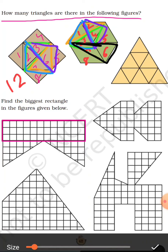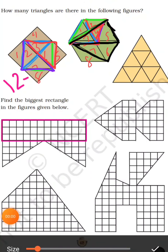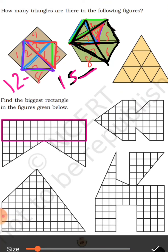Aar one more triangle — ek aur bhi aap ki triangle hai, yeh wali triangle: 14. Now next triangle — this is 15. So the total number of triangles is 15. Aap ke paas 15 triangles ban gai.